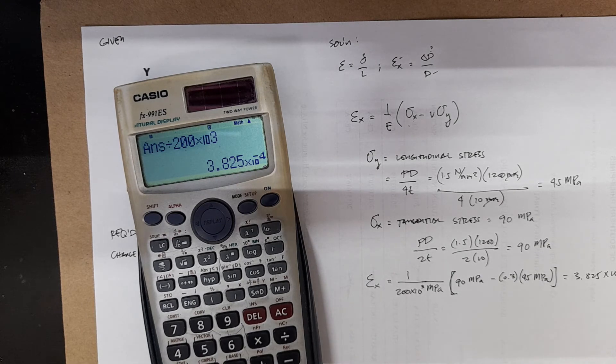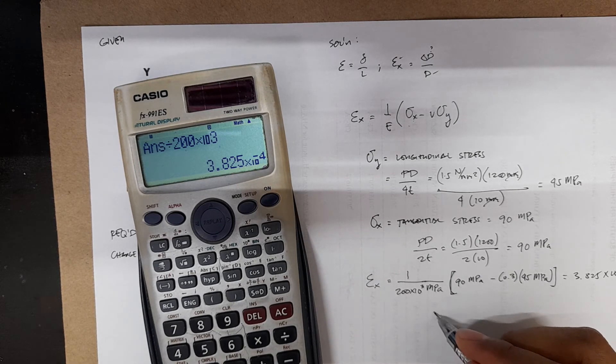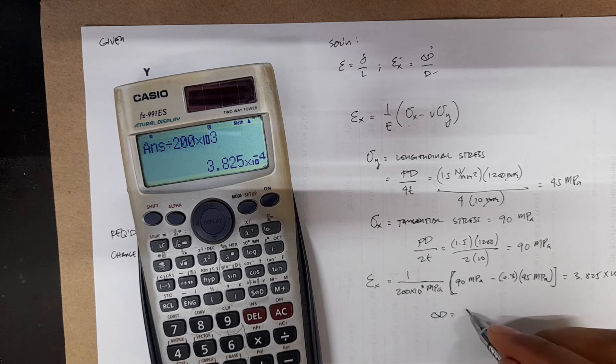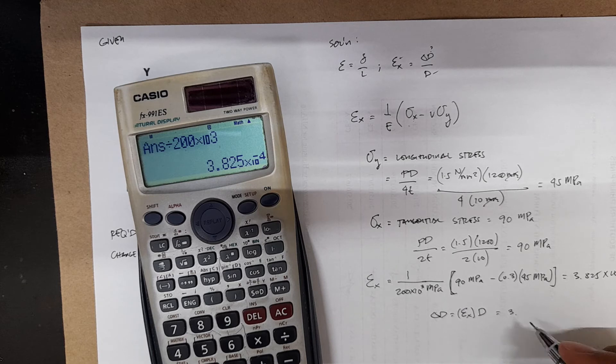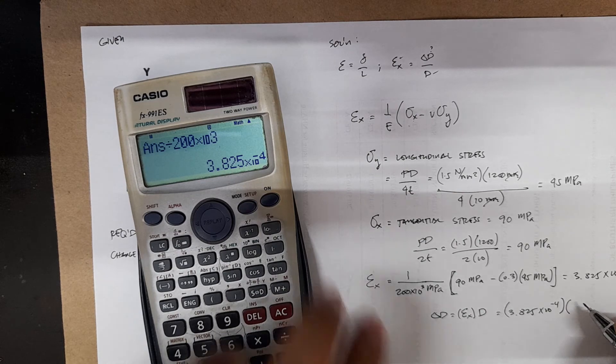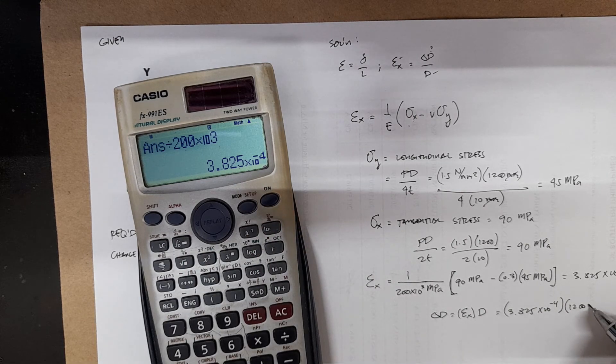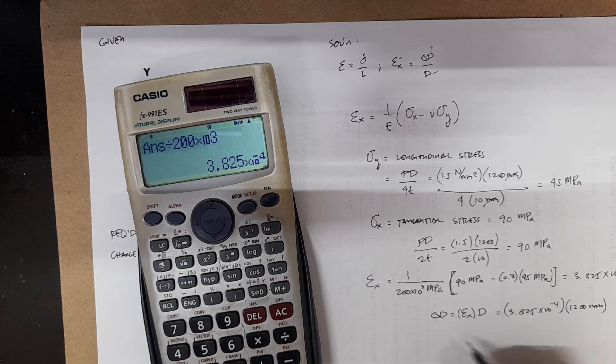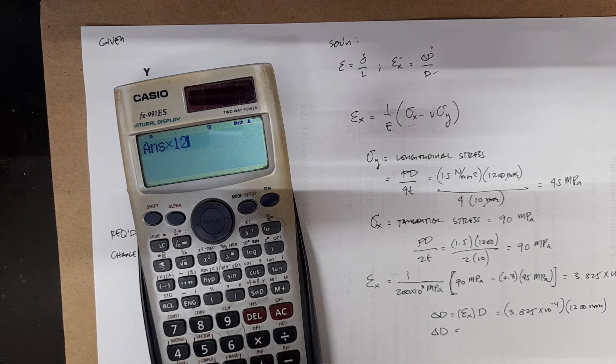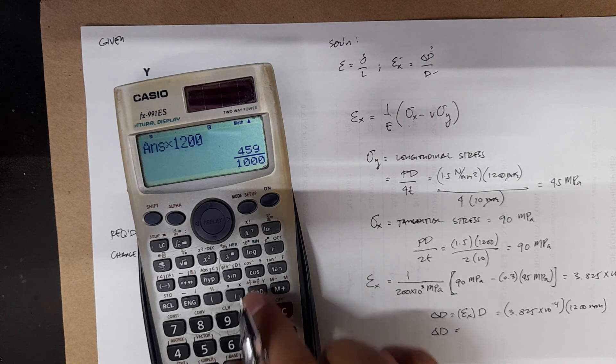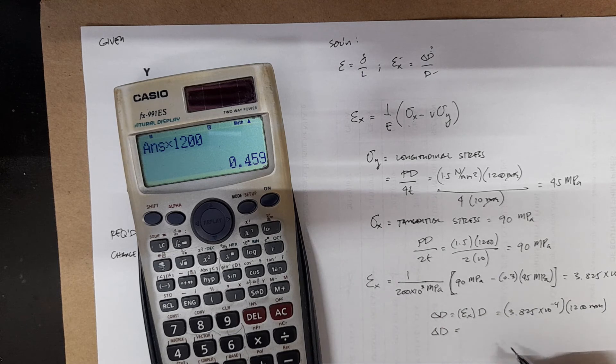And then we'll compute for the delta D. It's just delta D is just equal to strain times D. You will have 3.825 times 10 to the negative 4 times diameter which is 1200 mm. Your delta D, or change in diameter, is just equal to 0.459 mm.